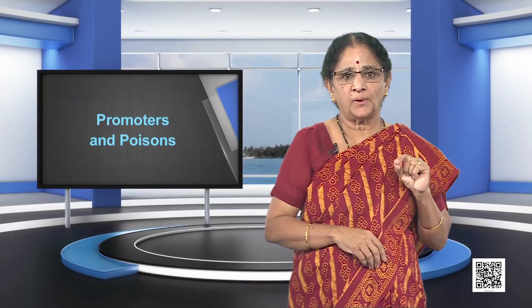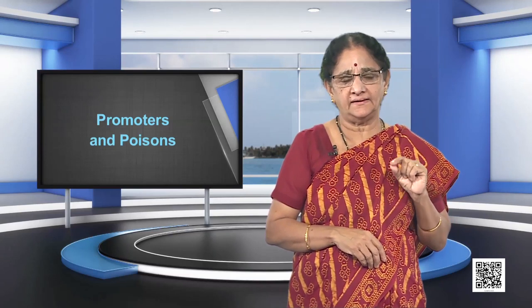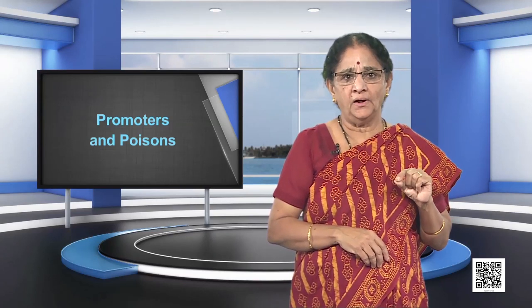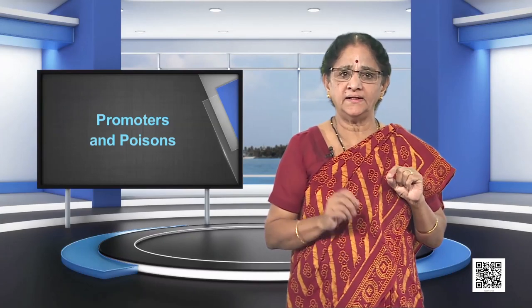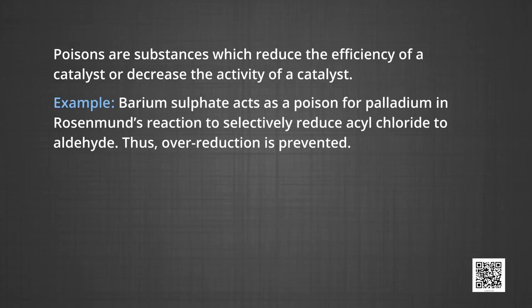The action of a promoter may be due to the formation of a compound between it and the catalyst, which may help to enhance the adsorption of substrate on the catalyst. Poisons are substances which reduce the efficiency of a catalyst or decrease the activity of a catalyst. For example, barium sulphate acts as a poison for palladium in Rosenmund's reaction to selectively reduce acyl chloride to aldehyde, thus preventing over-reduction.